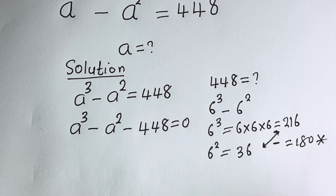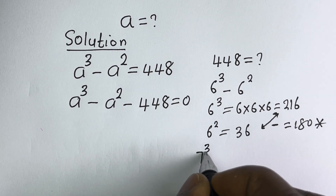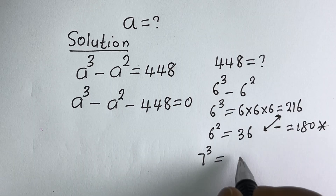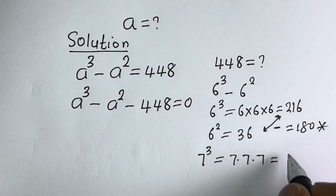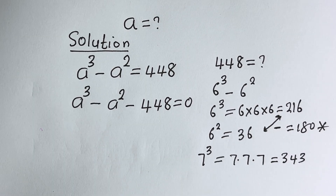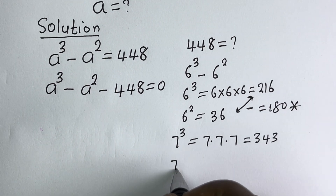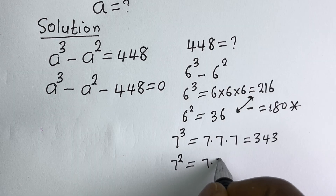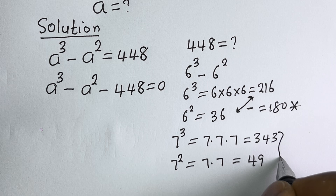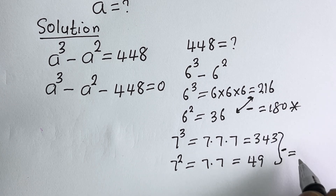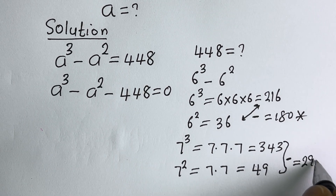So C=6 is not possible. Let's try 7. 7 to the power of 3 is equal to 7 × 7 × 7, which is 343. Then 7 squared is equal to 7 × 7, which is 49. Subtracting gives 294. Still not 448.